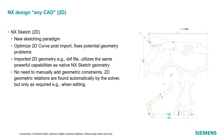When you import 2D geometry you want to make sure the geometry is valid, so we have a tool inside of NX called Optimize 2D Curve. It fixes potential geometry problems such as duplicate curves, overlapping curves, and small gaps in curves. It's a powerful tool to ensure geometry quality, and as part of the optimization process it can automatically generate an NX sketch.